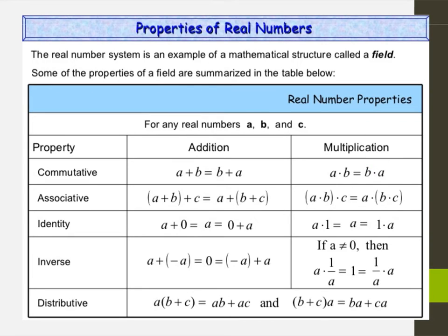The associative property is based on grouping. A plus B done first and then adding C is the same as A plus doing B plus C first. The associative property says those are equal no matter how we group them. The same goes with multiplication. You can really do them in any order, so grouping them differently doesn't change the result.